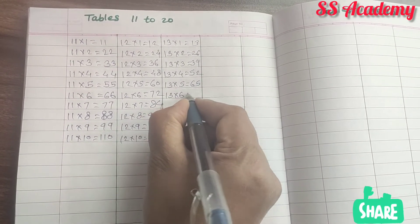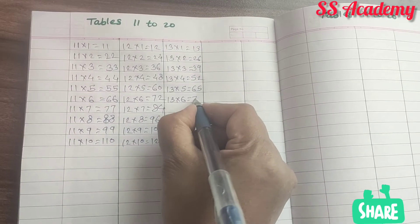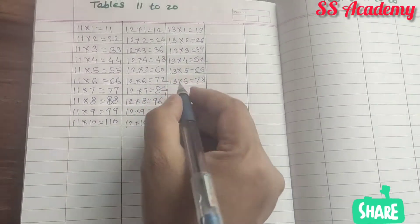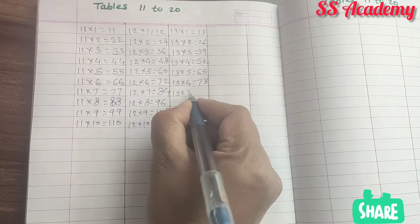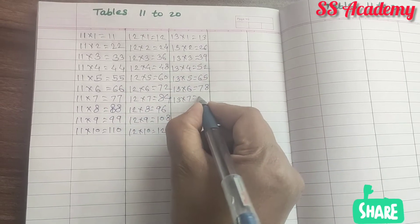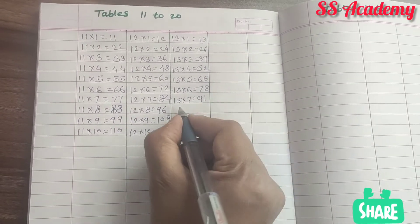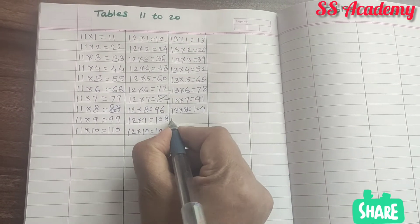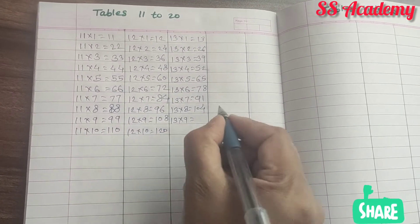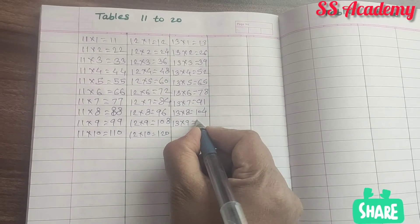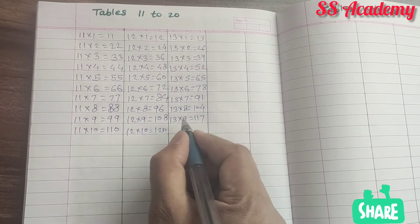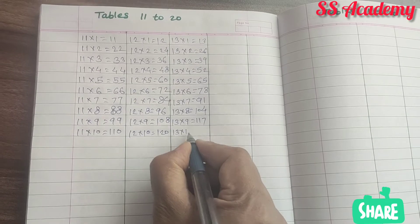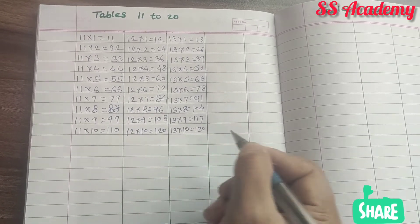13 times 6 is 78. 13 times 7 is 91. 13 times 8 is 104. 13 times 9 is 117. 13 times 10 is 130.